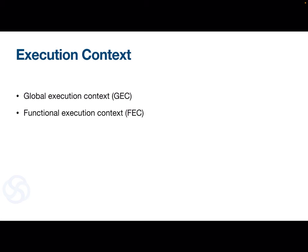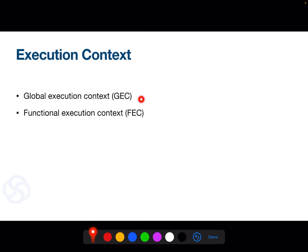Let's now start today's video. There are basically two types of execution context. First is the global execution context and second is the functional execution context. Whenever you run a JavaScript program, the very first execution context that is created is called the global execution context, and rest all things will happen inside it. Whenever you call or invoke a new function, a functional execution context is created. Both contexts are the same in nature, but there are slight differences I will tell you in this video.